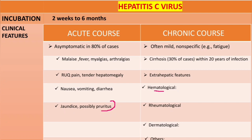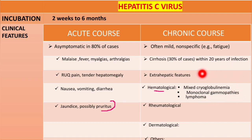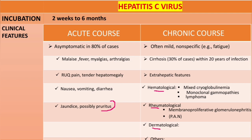Starting with hematological features: these include mixed cryoglobulinemia, monoclonal gamopathies, and lymphomas. Rheumatological features include membranoproliferative glomerulonephritis and polyarteritis nodosa (PAN). Dermatological features include porphyria cutanea tarda and lichen planus. Detailed explanations for these conditions are available in the description box.